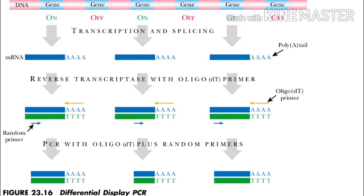Differential display PCR is used to specifically amplify messenger RNA from eukaryotic cells. The technique is valuable because it allows the researcher to assess the expression of many different mRNA molecules simultaneously.